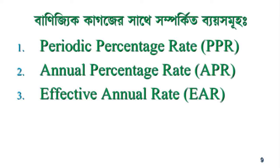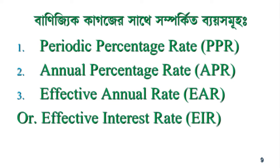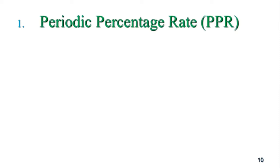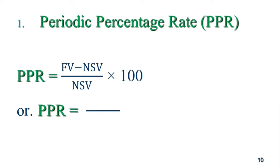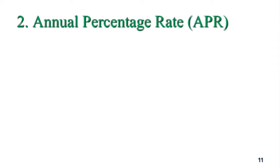The number is effective annual rate, EAR, or effective interest rate, EIR. The cost of commercial paper.